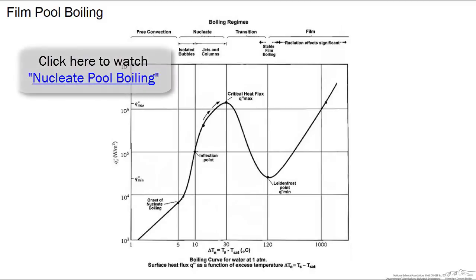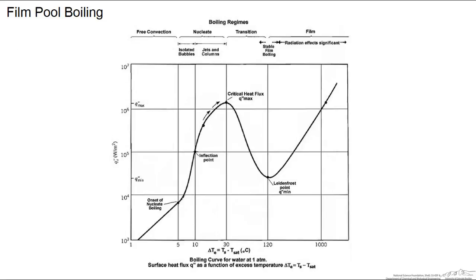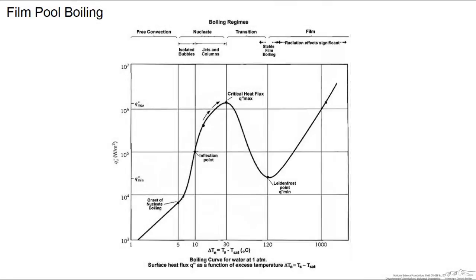In an earlier screencast, we looked at the regime of pool boiling known as nucleate. In this screencast, we're going to look at the regime known as film pool boiling, where a vapor film covers the surface of the liquid and radiation becomes significant. So we're going to need to include the heat transfer coefficient for radiation in any calculations for our heat transfer.